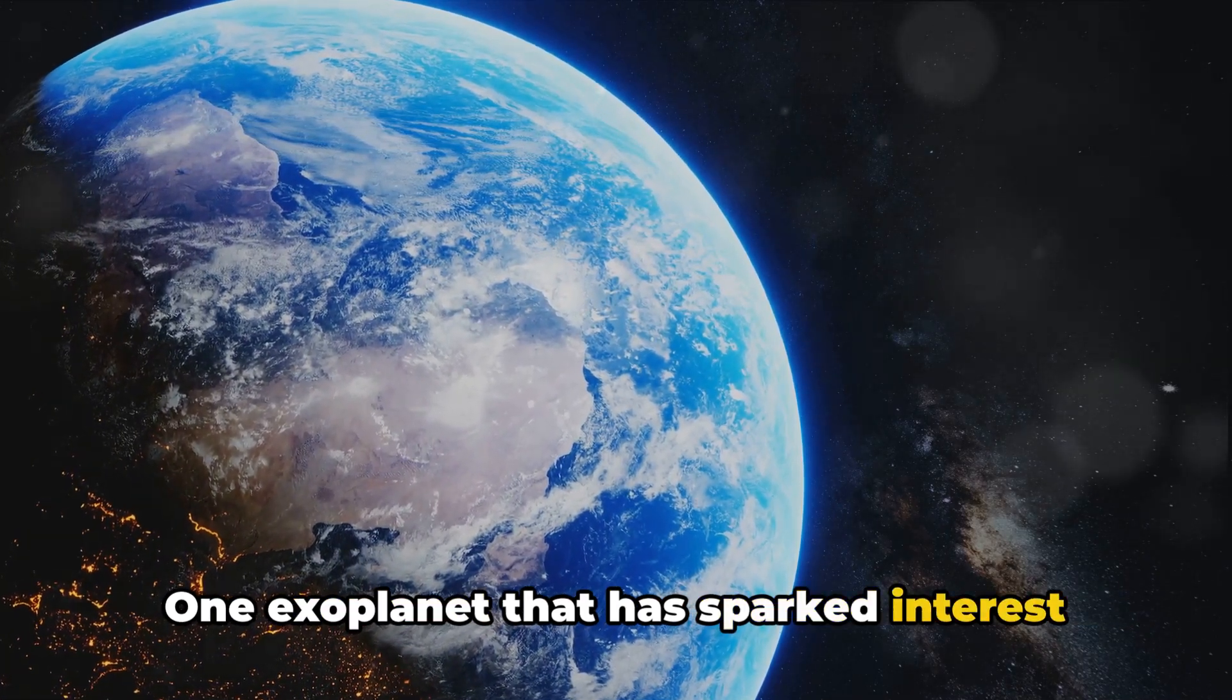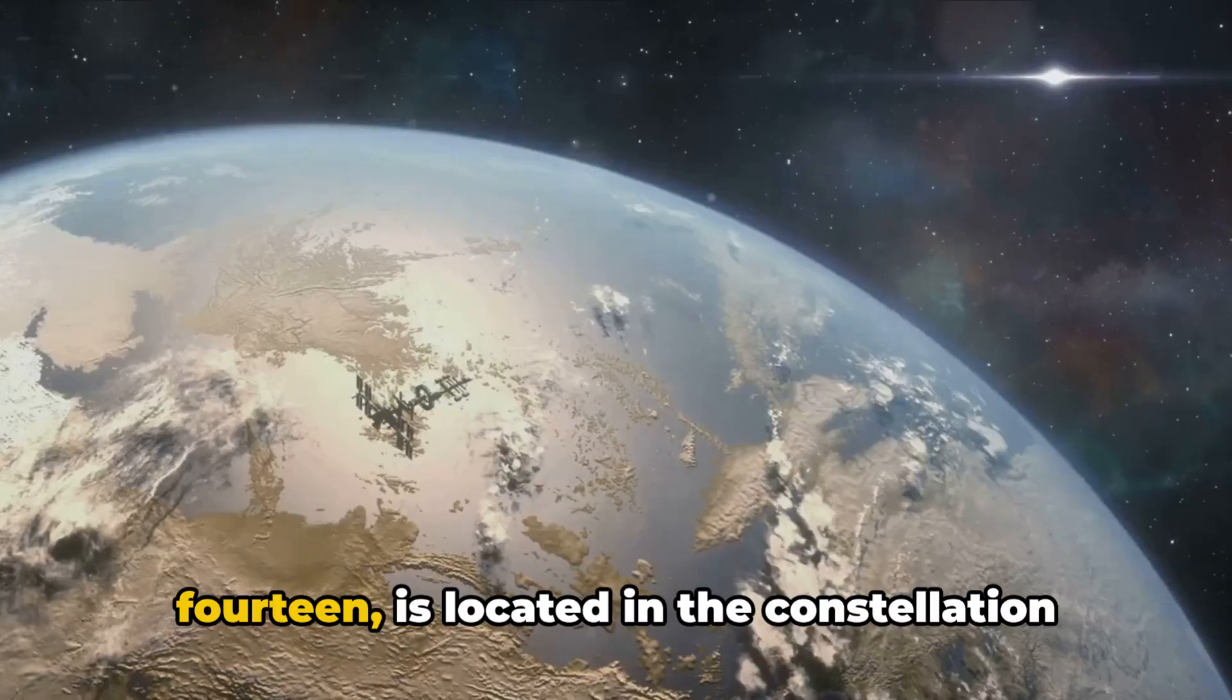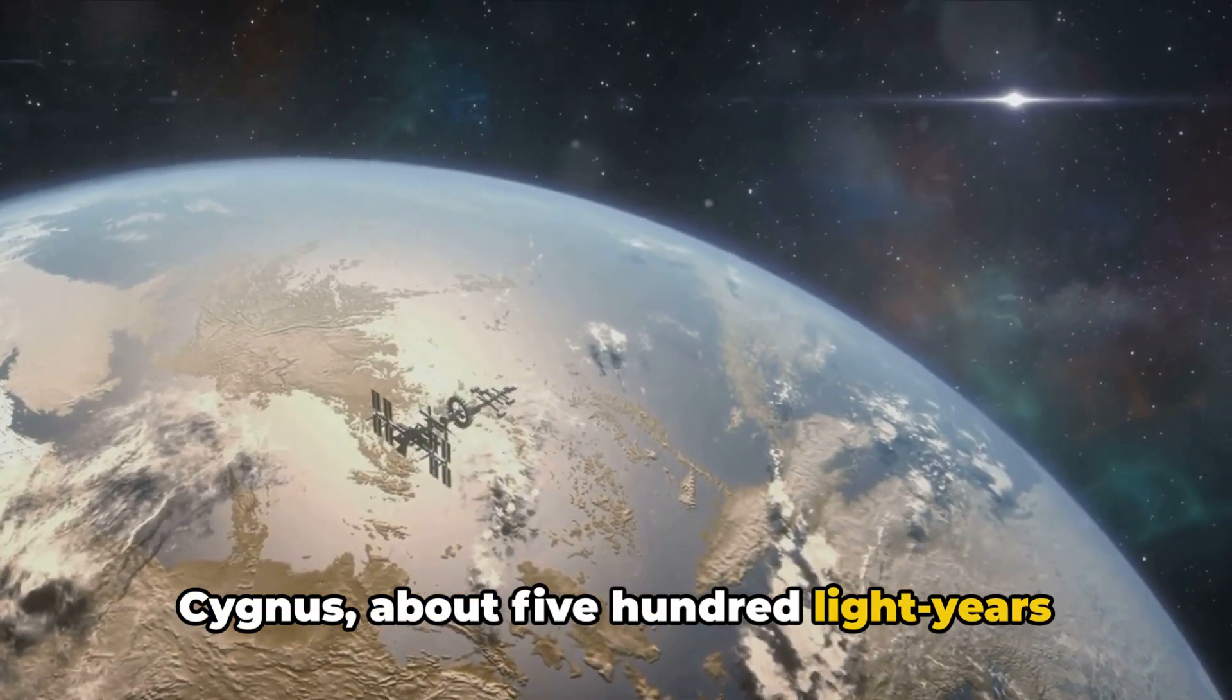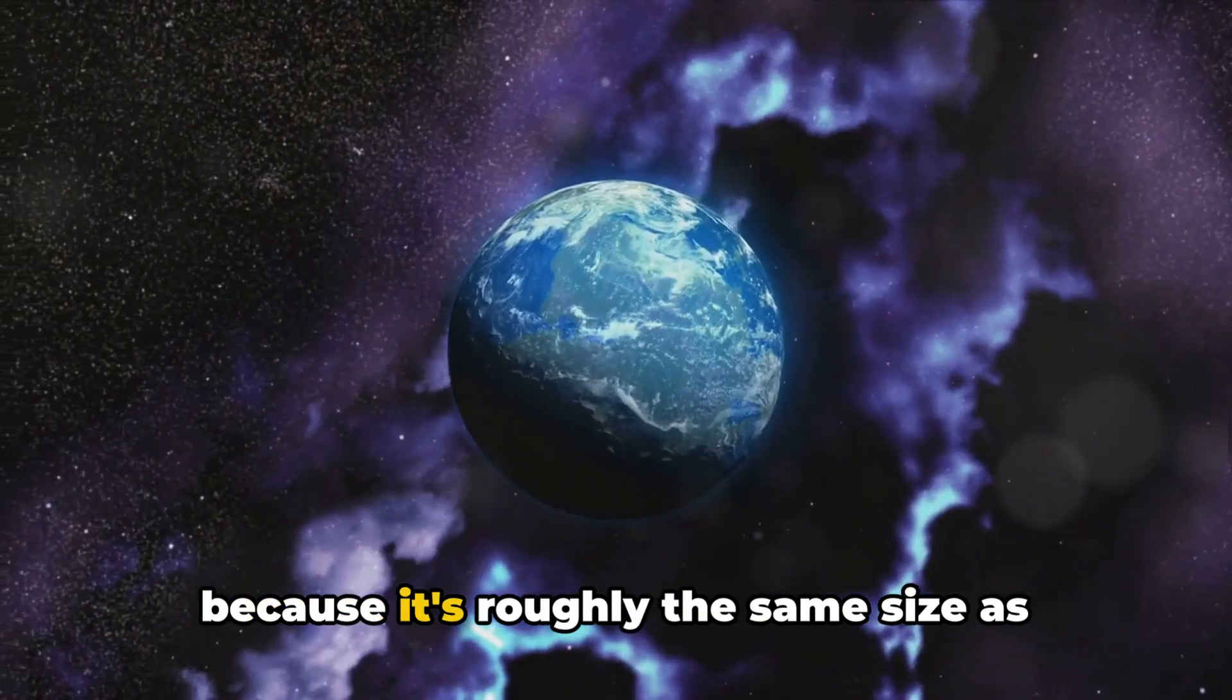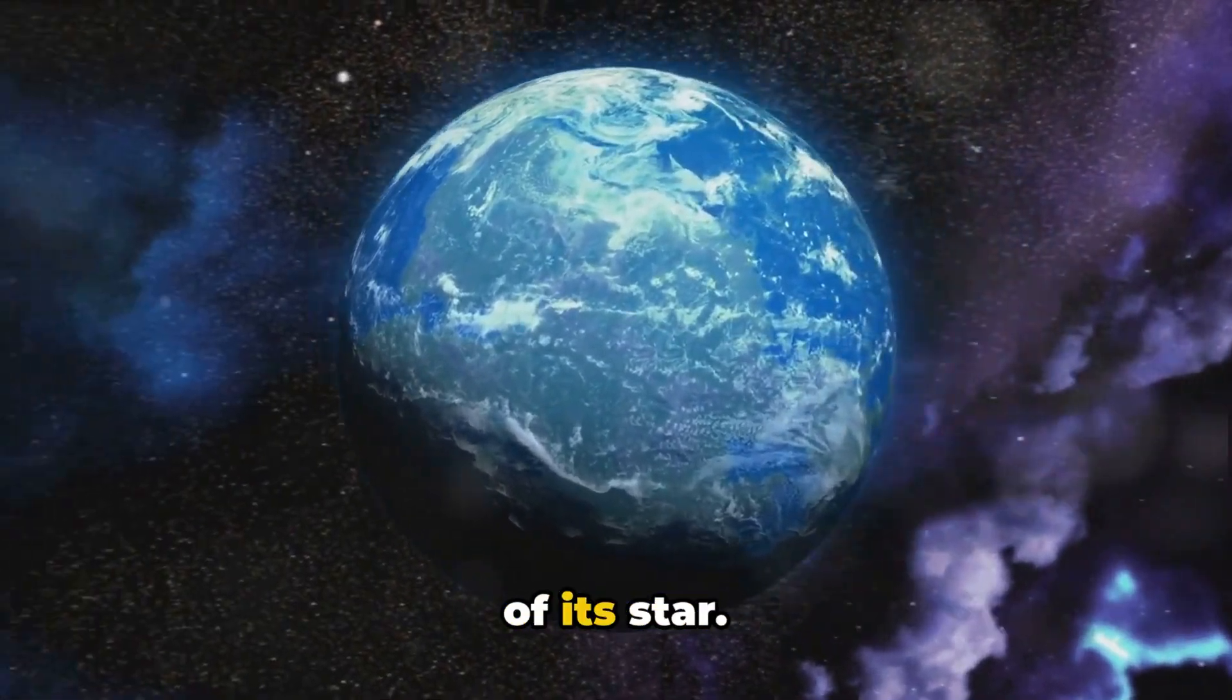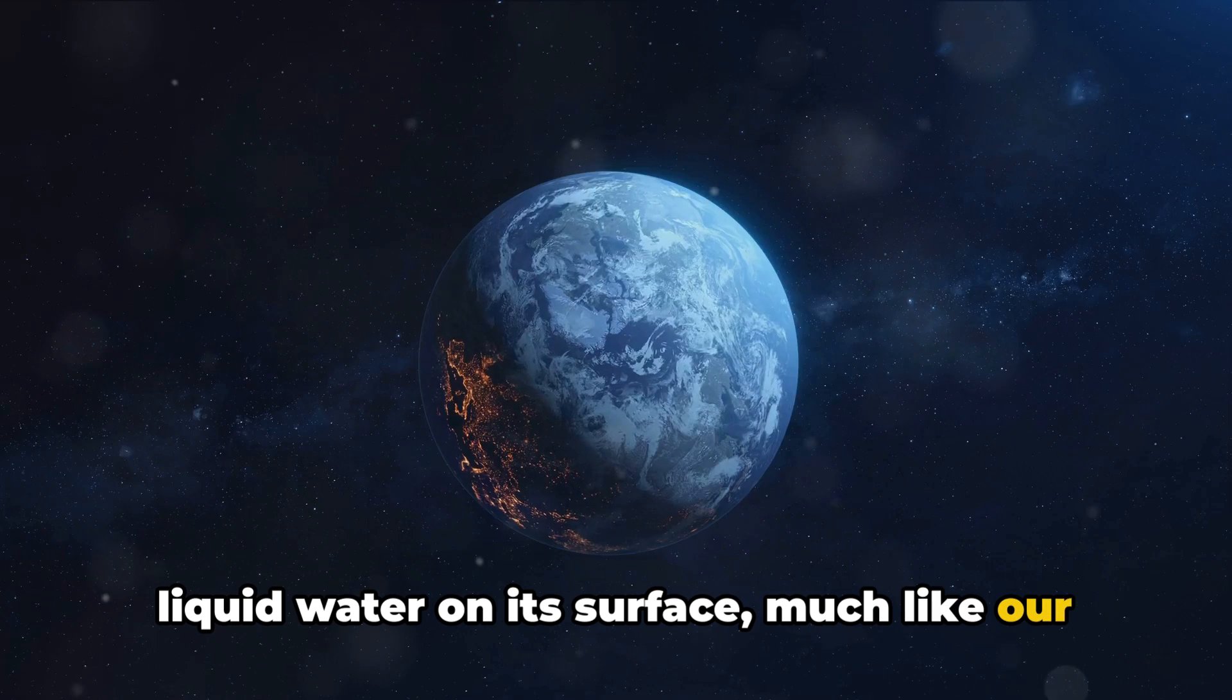One exoplanet that has sparked interest is Kepler-186f. This planet, discovered in 2014, is located in the constellation Cygnus, about 500 light-years from Earth. Kepler-186f is particularly exciting because it's roughly the same size as Earth and is located in the habitable zone of its star. This means it has the potential to hold liquid water on its surface, much like our home planet.